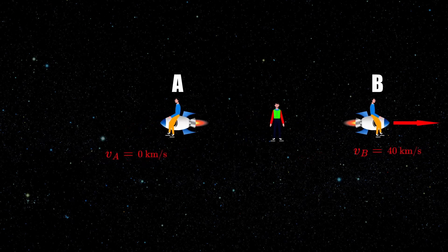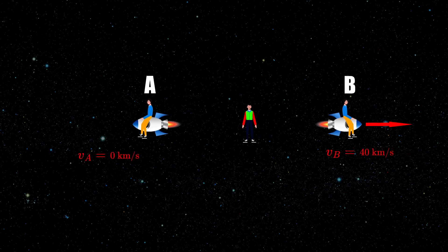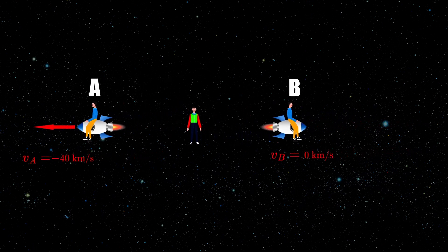The observer A would say that he is at rest and the observer B is moving with twice the velocity away from him. But who is right?